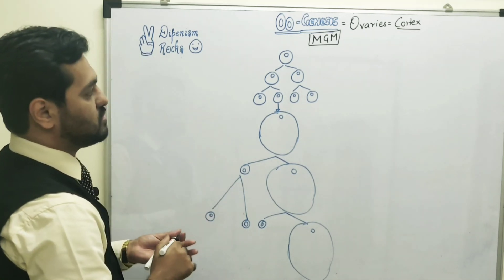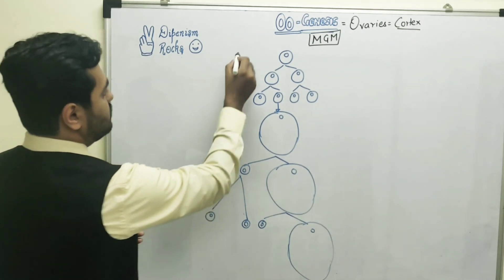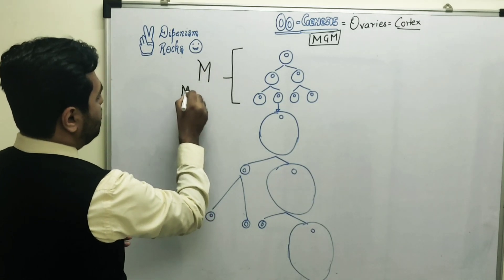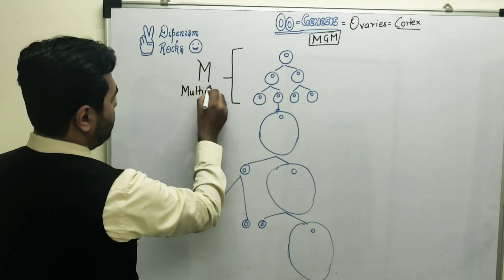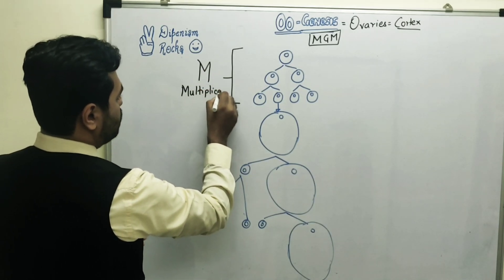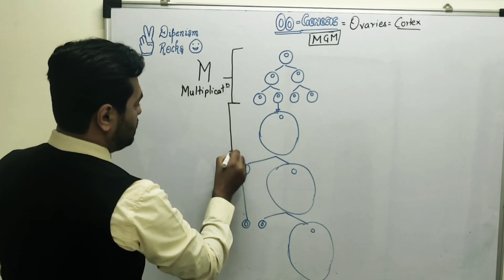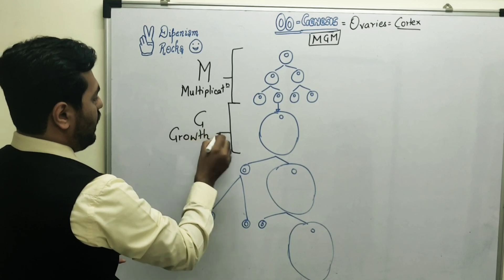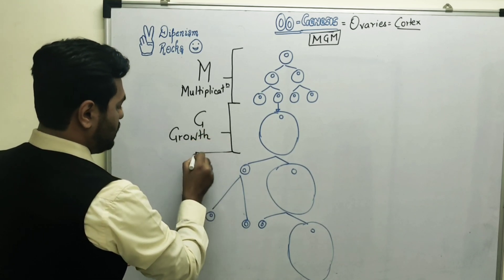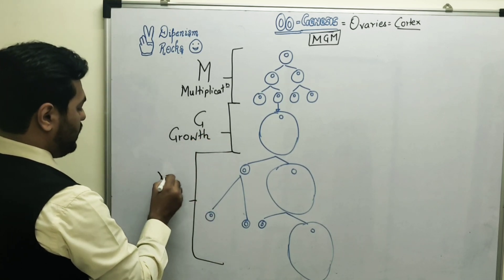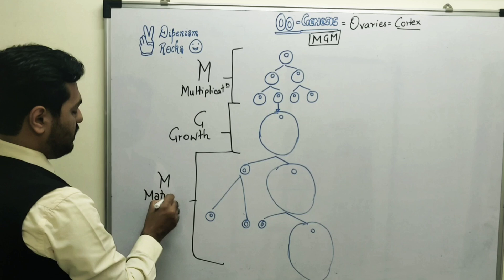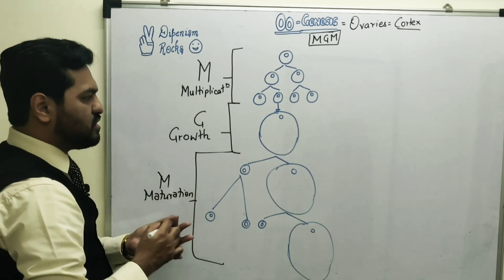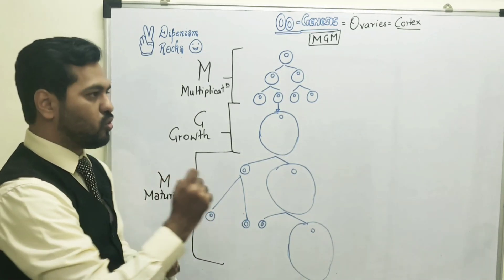Just like spermatogenesis, oogenesis also has three stages, which I have called MGM — Mahatma Gandhi Mahan. The three stages are: M for the Multiplication phase, G for the Growth stage, and M for the Maturation phase. These three phases have the same names, but there are certain characteristic differences to understand.